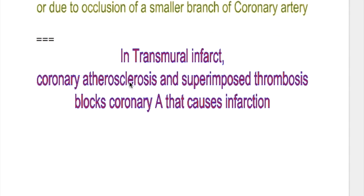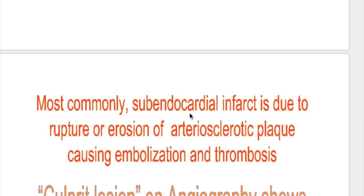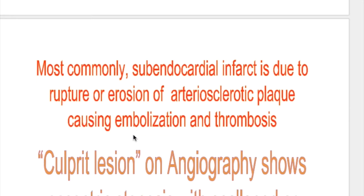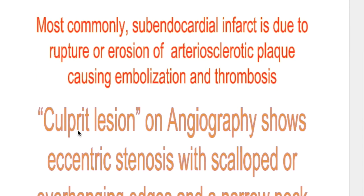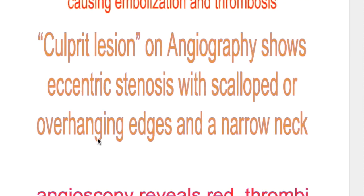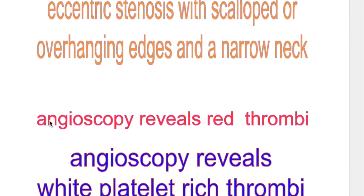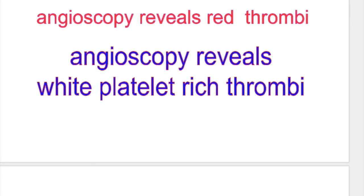In transmural infarct, coronary atherosclerosis with superimposed thrombosis blocks the coronary artery causing infarction. Most commonly, subendocardial infarct is due to rupture or erosion of an atherosclerotic plaque causing embolization and thrombosis. The culprit lesion in subendocardial infarct on angiography shows eccentric stenosis with scalloped or overhanging edges and a narrow neck. Angiography in transmural infarct reveals a red thrombus, whereas in subendocardial infarct it reveals a white platelet-rich thrombus.